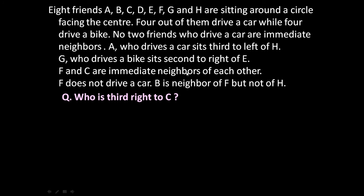F and C are immediate neighbors of each other. F does not drive a car. B is neighbor of F but not of H. Now the question is: who is third to the right of C?